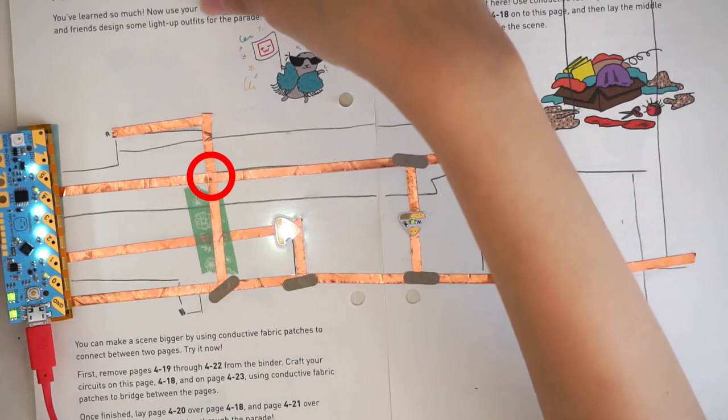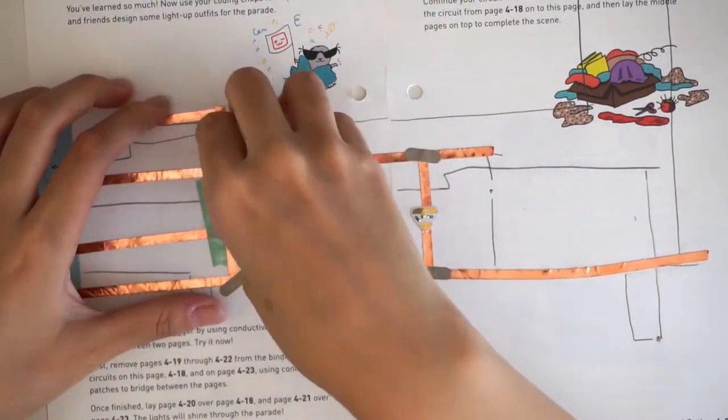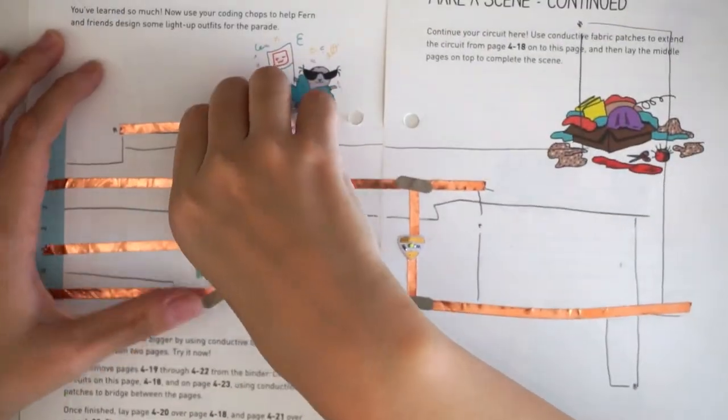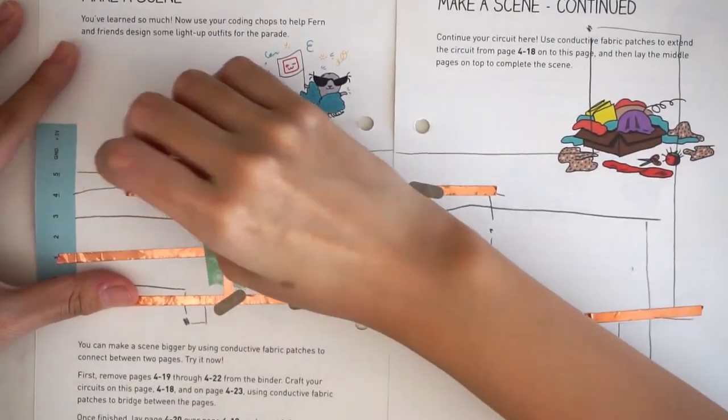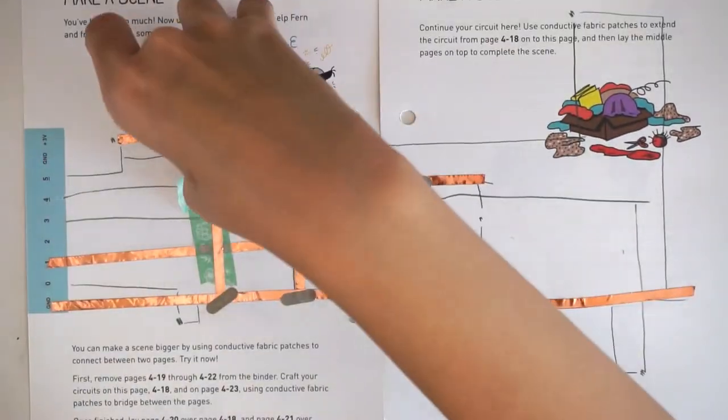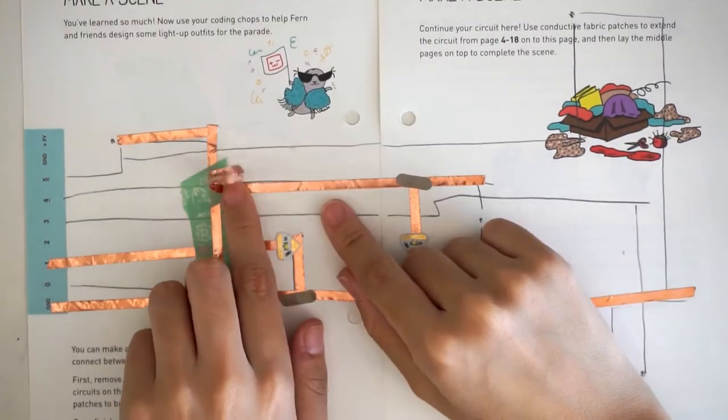We forgot to insulate a copper tape crossing with regular tape! No worries! It's easy to fix because we caught the bug early on. Just peel back the copper tape, paste on the regular tape, and reapply the copper tape.